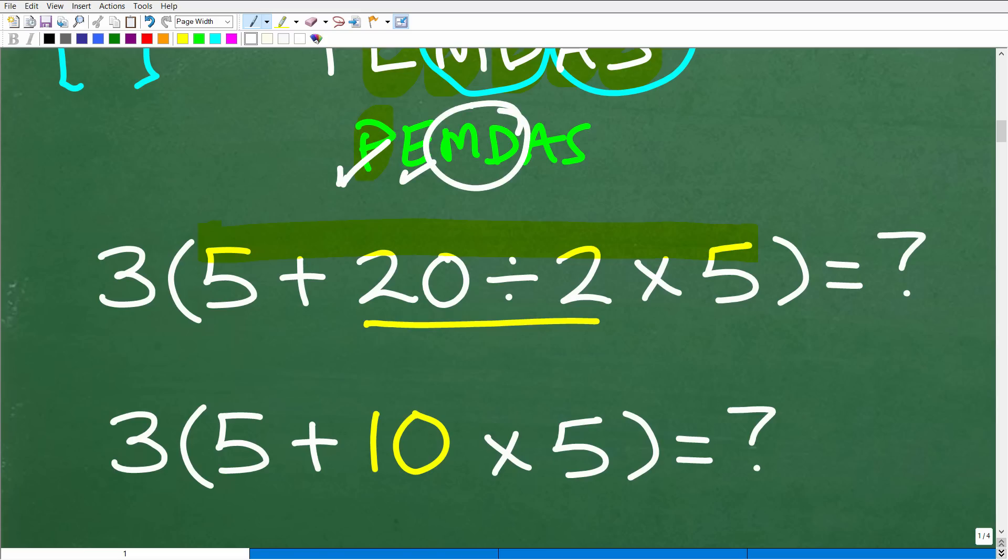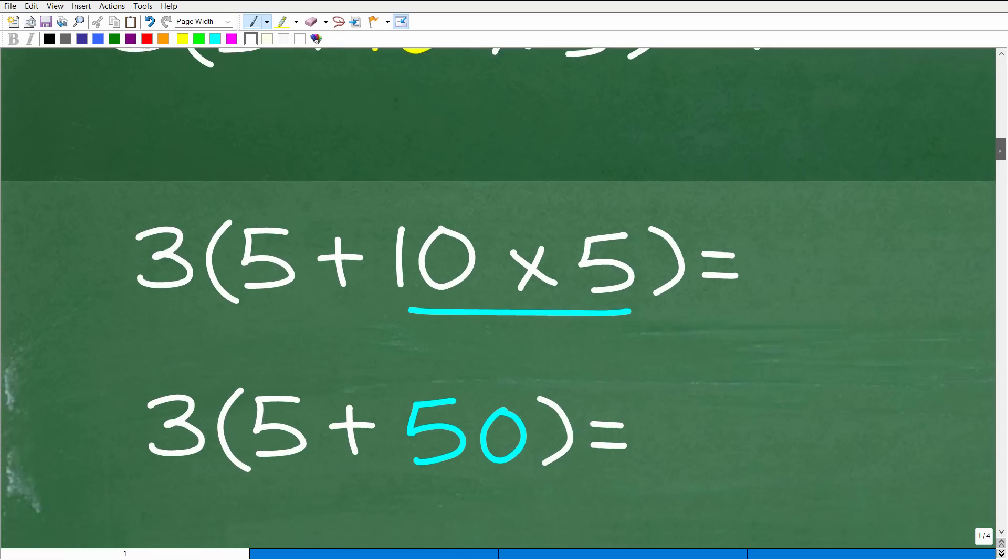M and D together - not just M then D. Is there any multiplication and division? Yes, division right here and multiplication here. What comes first from left to right? This does: 20 divided by 2. That's pretty straightforward. 20 divided by 2 is 10, so we rewrite the problem. Now we have 3 times (5 + 10 times 5).